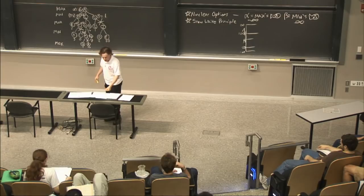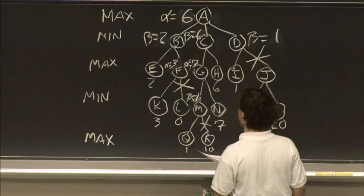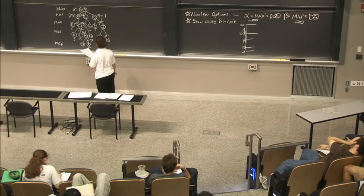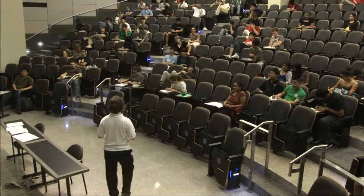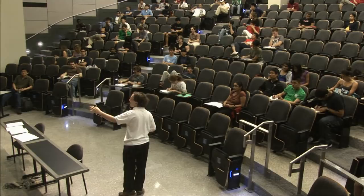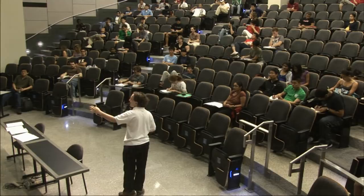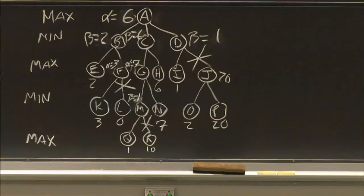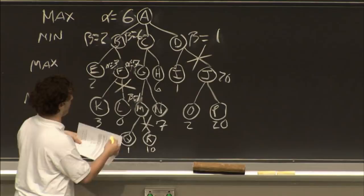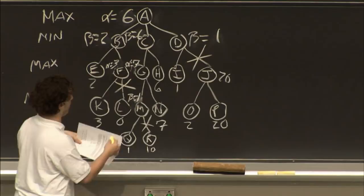Suppose we do progressive deepening on a tree that is only two levels deep. The idea is: it doesn't take that much extra time to do some of the top levels first, then move on to the bottom levels. Let's say we only went up through nodes F, G, and J — the top two levels. Those nodes get static values of 3, 7, and 20. If those happen to be the exact correct numbers, what's the best way to reorder the tree so alpha-beta can prune as much as possible?